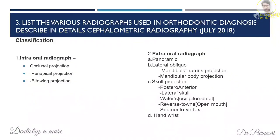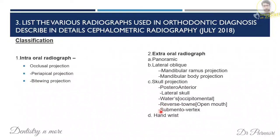Next: list the various radiographs used in orthodontic diagnosis. Intraoral radiographs include occlusal, periapical, and bitewing. Extraoral radiographs include panoramic, lateral oblique, and skull projections — lateral cephalogram, anteroposterior cephalogram, Water's view, reverse Towne's, submentovertex — and also the hand-wrist radiograph.